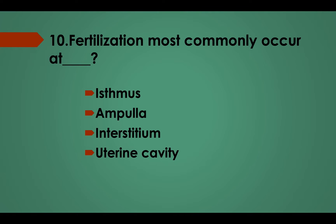Question No. 10: Fertilization most commonly occurs at: Option A, Isthmus; Option B, Ampulla; Option C, Interstitium; Option D, Uterine cavity. Answer: Option B, Ampulla.